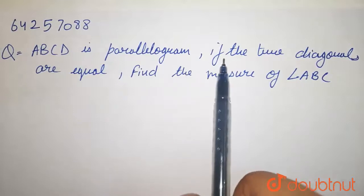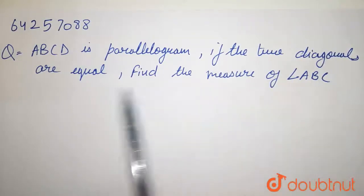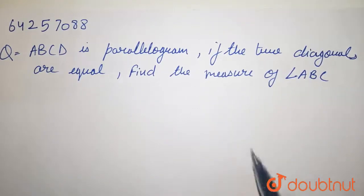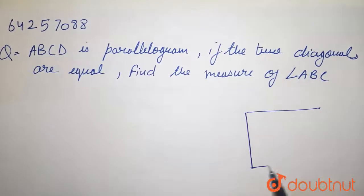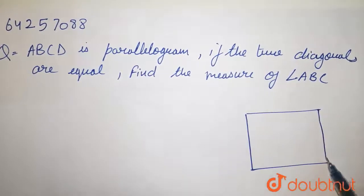is a parallelogram. If the two diagonals are equal, find the measure of angle ABC. Here I can draw the parallelogram whose diagonals are equal.